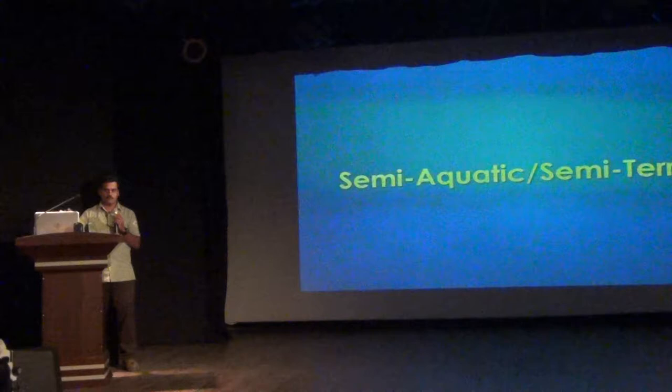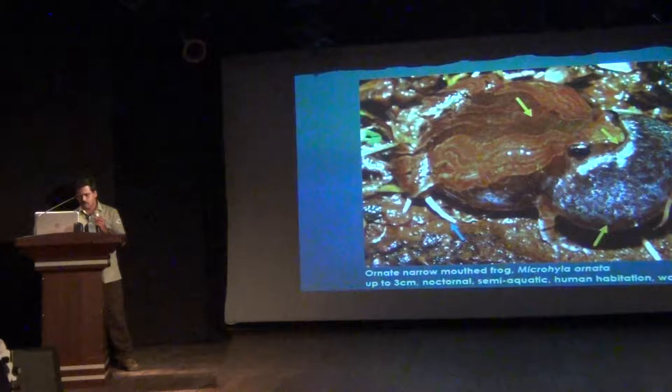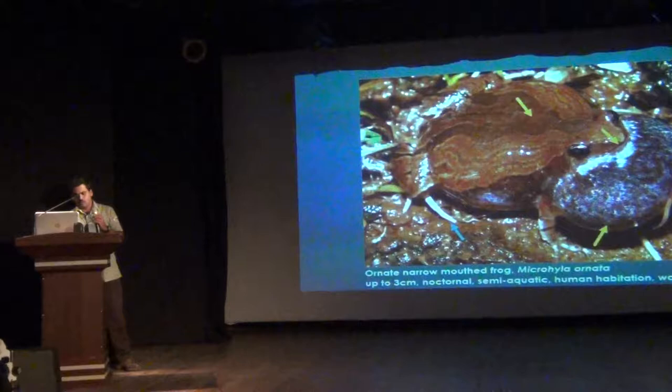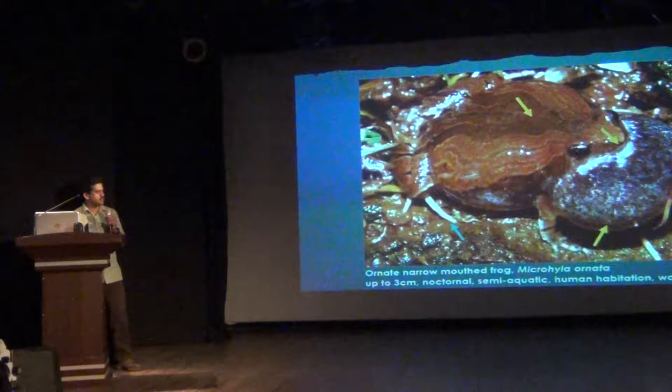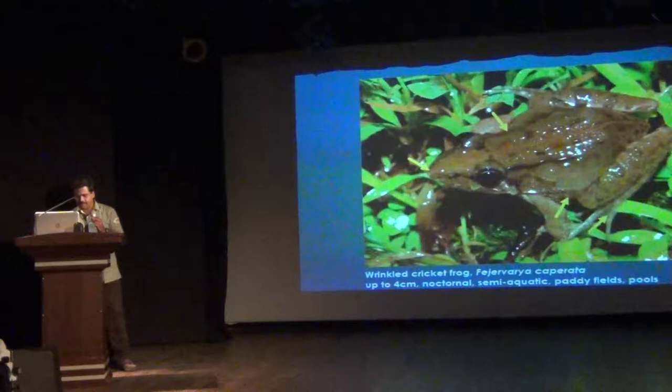Moving to semi-aquatic frogs, which live on the edges of water bodies, in agriculture fields, or paddy fields. One of the commonest is Microhyla ornata, the Ornate Narrowmouth Frog, which calls like this. In comparison to toads, there is no poison gland; it has a smooth body with ornamentation on the back — that's why the name. It has a very small mouth, a blackish vocal sac, and blunt toe tips with no dilated fingertips.